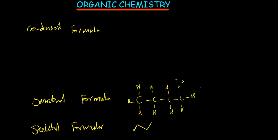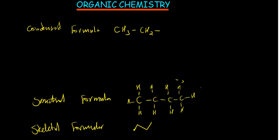For the condensed formula, we write each carbon with the number of hydrogens it carries. The first carbon has three hydrogens: CH₃; the second has two: CH₂; the third has two: CH₂; the last has three: CH₃. So the condensed formula is CH₃–CH₂–CH₂–CH₃, which can also be written without the dashes.